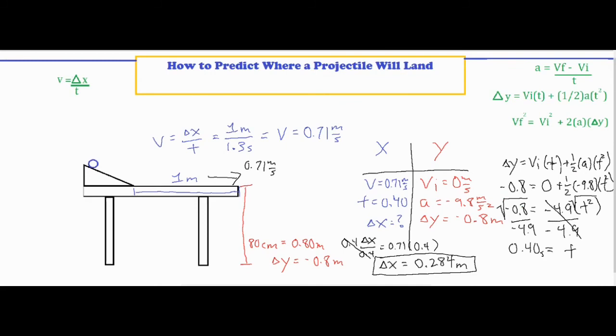And I plugged everything in, did two steps of algebra, dividing both sides by negative 4.9 and then square rooting it to find my time. And I found a time of 0.4 seconds, which I found in the y column that can also be placed into the x column because time doesn't have a direction. It could be placed in either one of the columns.